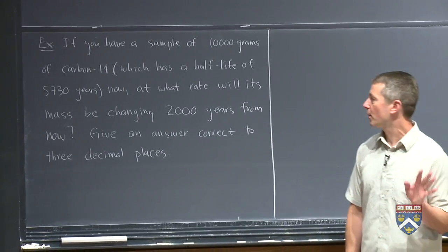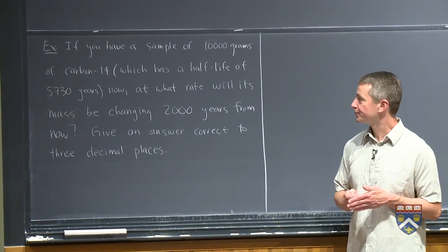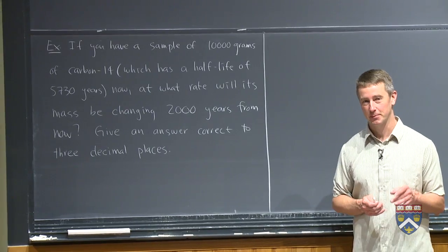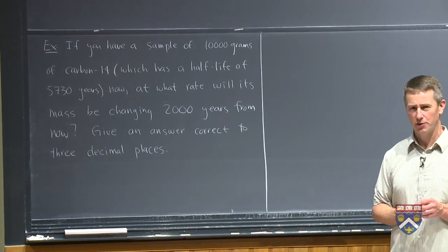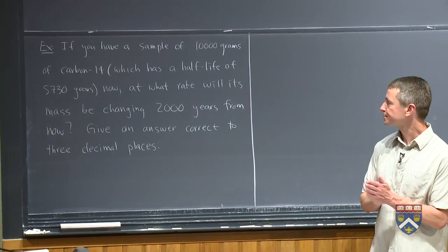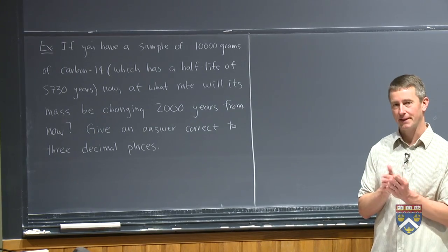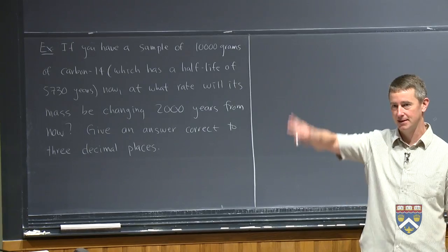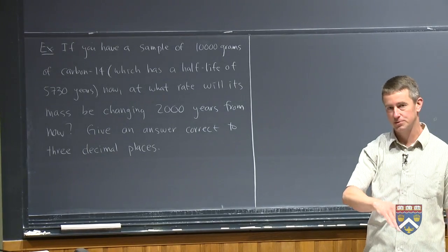So as usual, let's try to think about what a reasonable answer would be. So the half-life of 5,730 years, it doesn't decay very quickly. So it's going to be pretty small, the rate of change, and will the rate of change be positive or negative? I hope you're saying that it'll be negative, because the quantity is decaying, right? If you look at the graph of this, it's an exponential decay, so the slope should be negative.